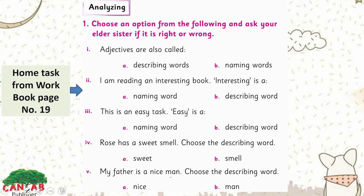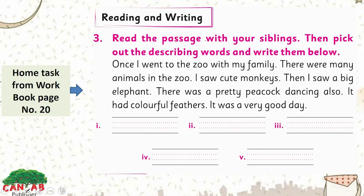This is your home task from the textbook, page number 19. What you have to do: choose an option from the following and ask your elder sister or somebody older than you if it is right or wrong. This exercise is about describing words — you have to choose an option. This is also your home task from the workbook, page number 20.